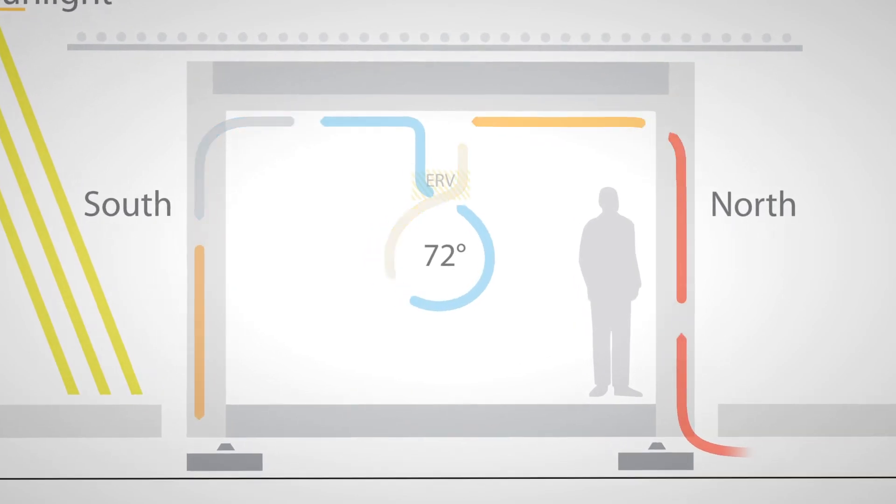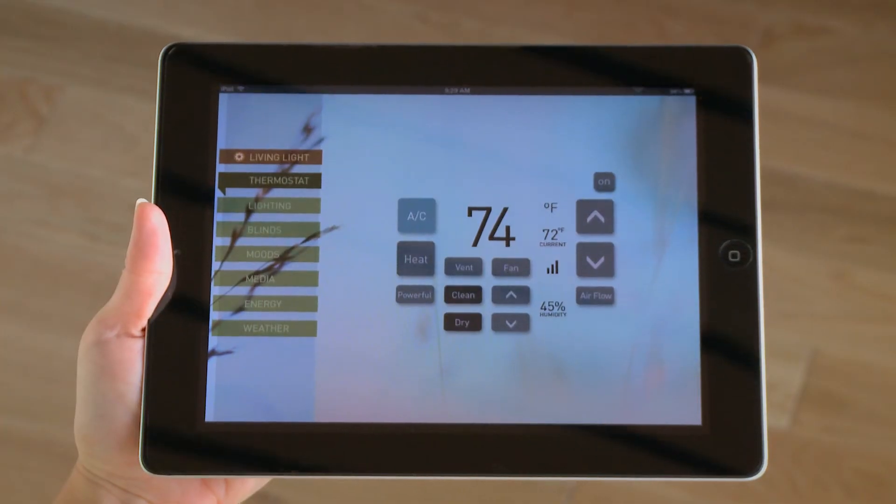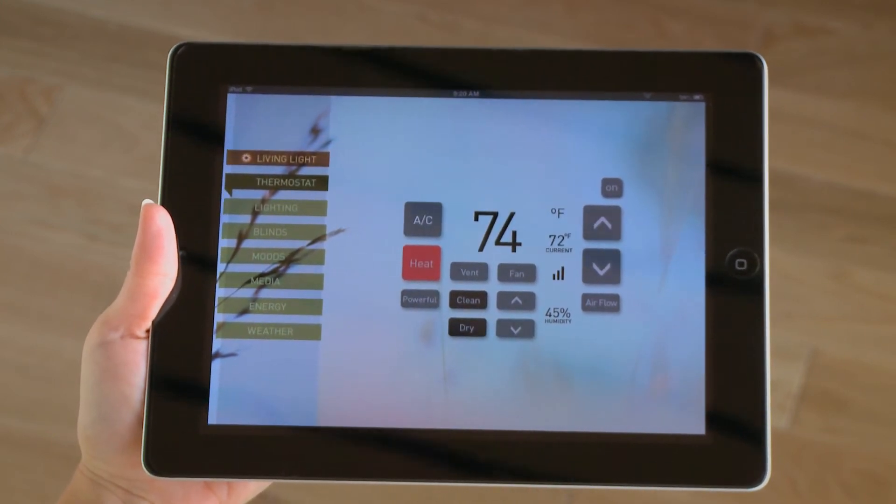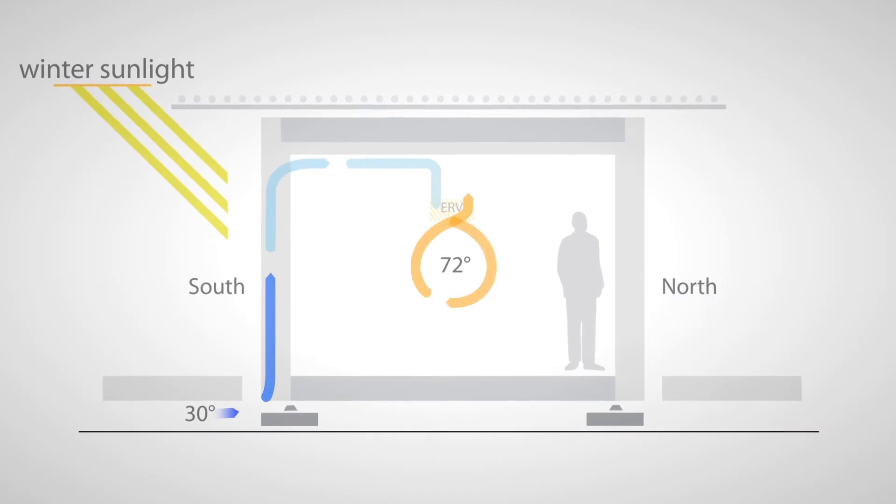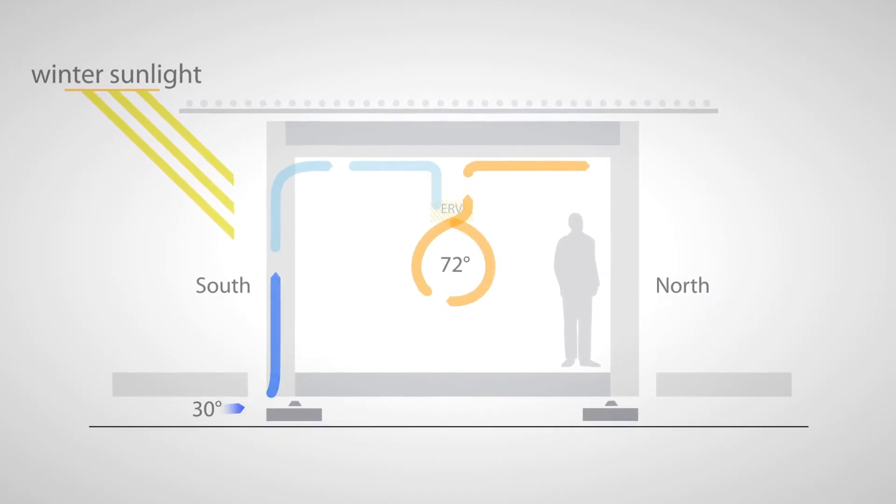The system is reversed in the winter, preheating air from the south facade and exhausting stale air out through the north facade, warming the cavity to buffer heat losses.